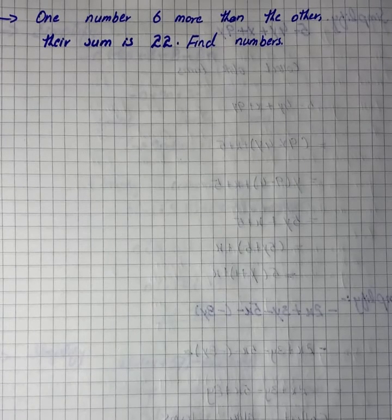The question says that one number is six more than another number and their sum is 22. Find the numbers.